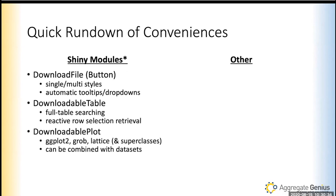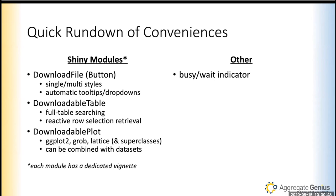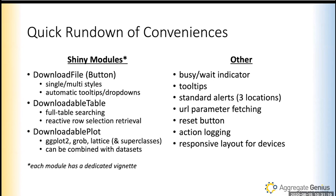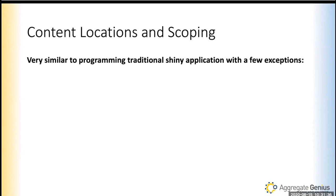There are a number of Shiny modules included with the package, each with a dedicated vignette. Built-in conveniences include a busy indicator, tooltips, alerts that show up in standard locations, URL parameter fetching, a reset button, user action logging for audit capability, and responsive device support. You can have a left sidebar, right sidebar, both, or neither. It is actively maintained and updated — we're constantly adding things and improvements.